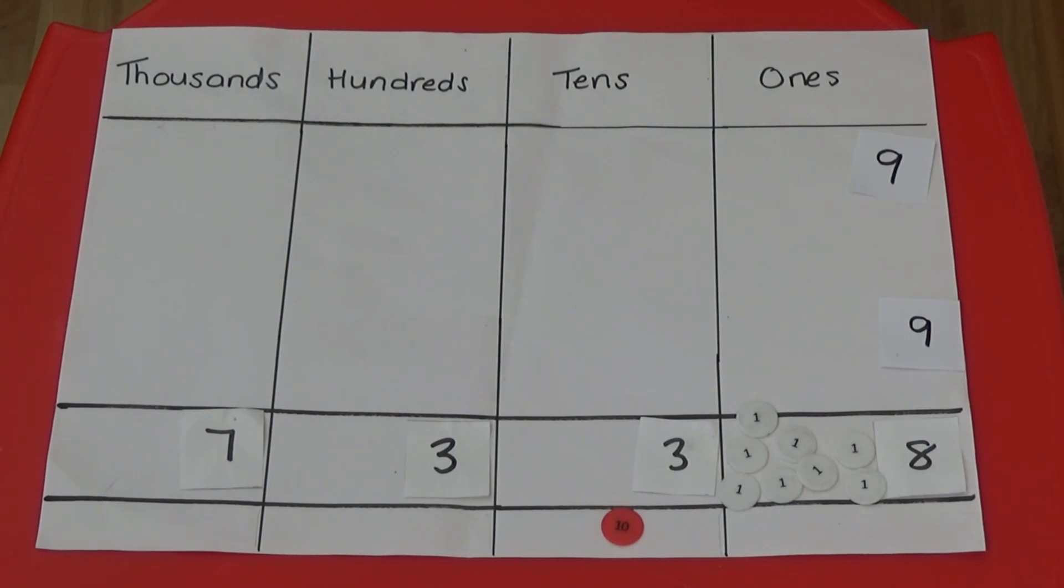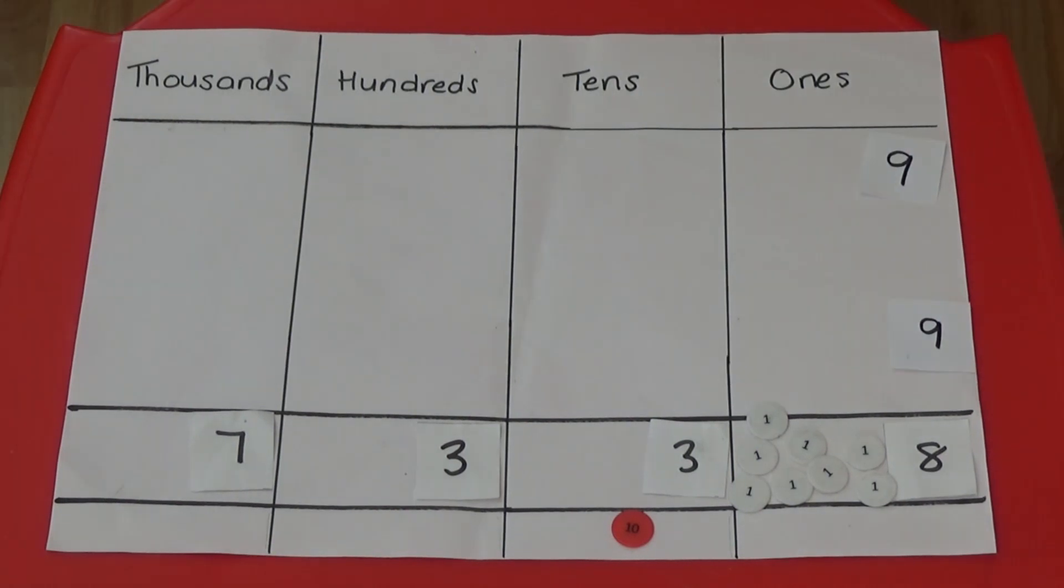9 10s add 3 10s equals 12 10s. If we add the 1 10 underneath we have 13 10s. I'm going to position the digits 3 and 9 in the 10s column of the question.